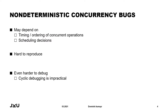Multi-paradigm concurrent programs, just like any other concurrent programs, may suffer from non-deterministic concurrency bugs. This is a category of bugs that may depend on things like the timing or ordering of concurrent operations and scheduling decisions. For instance, a bug may only occur if a specific order of lock acquisitions is performed by a number of threads. This means these bugs are hard to reproduce because in addition to the input of the program and its source code, they also depend on this non-deterministic ordering or timing.